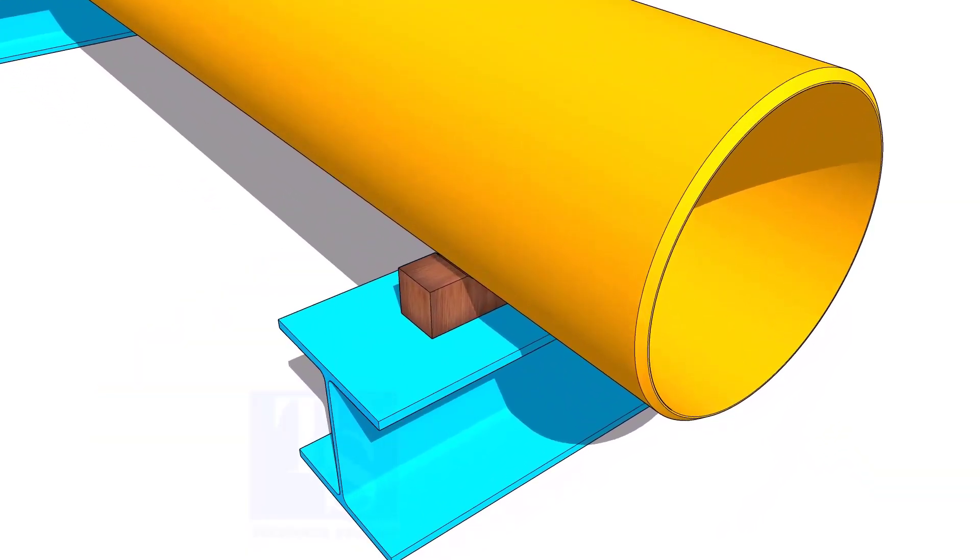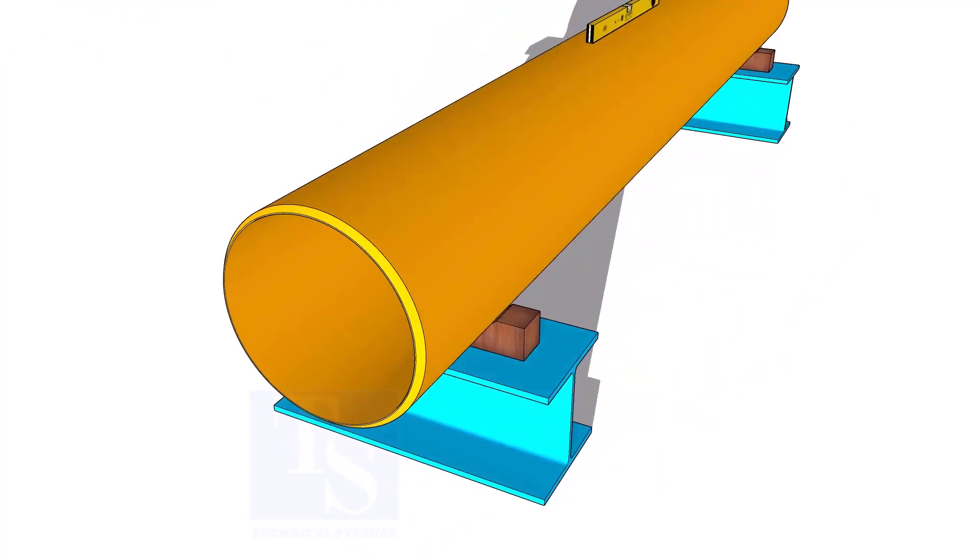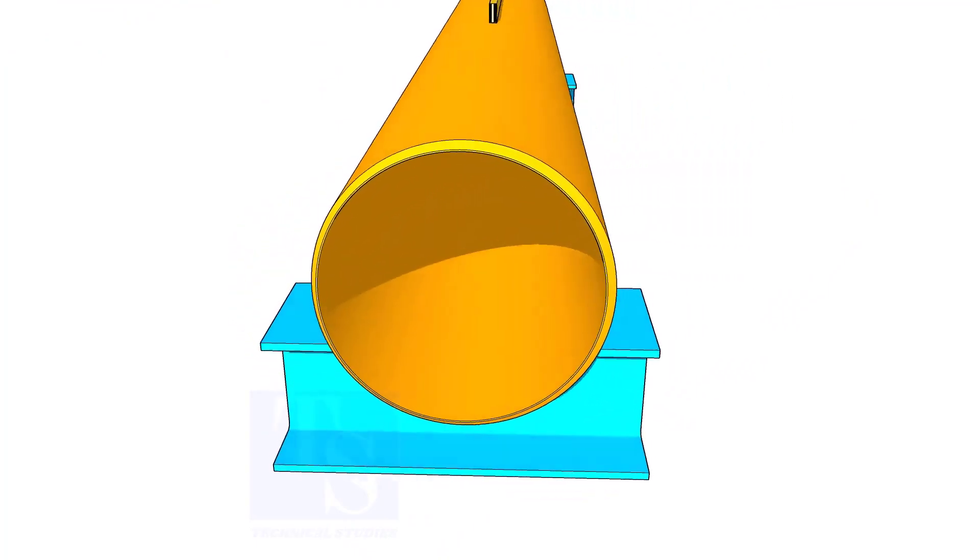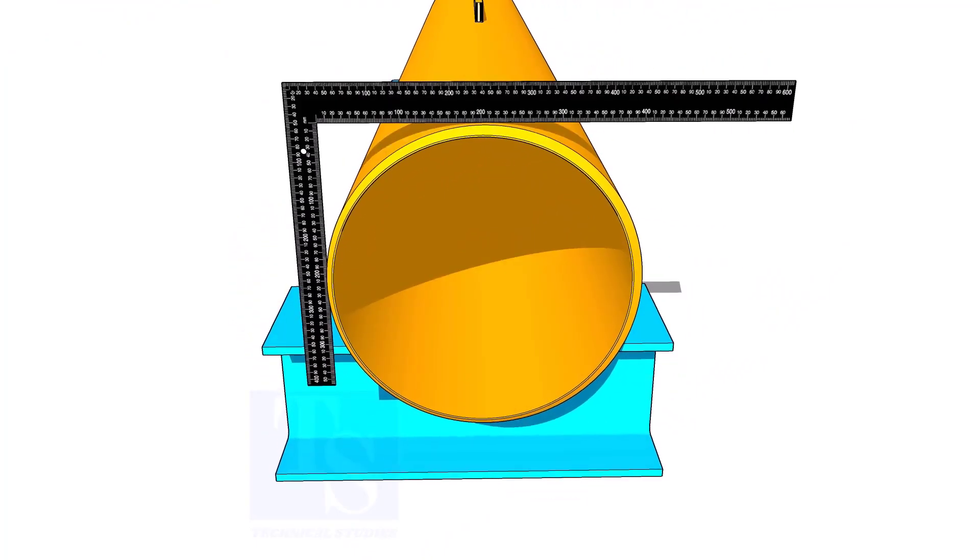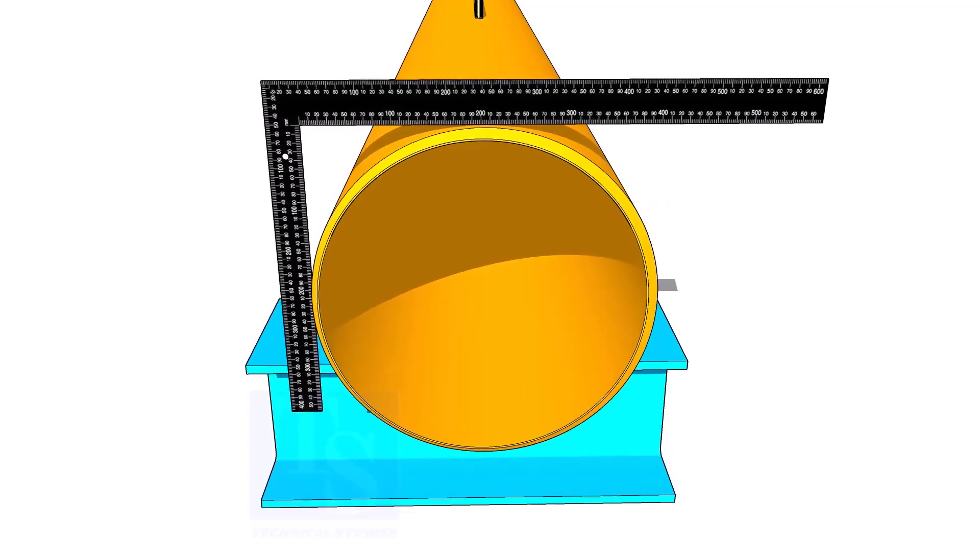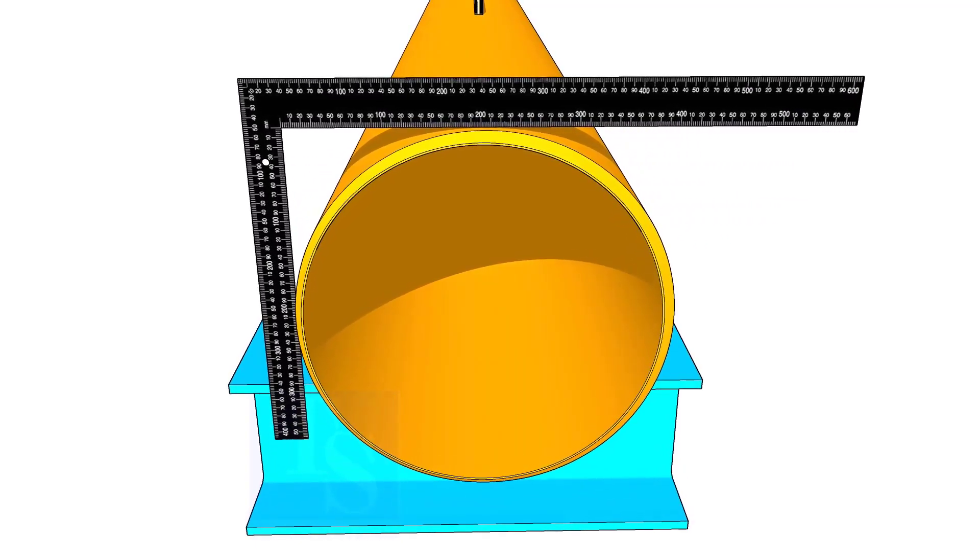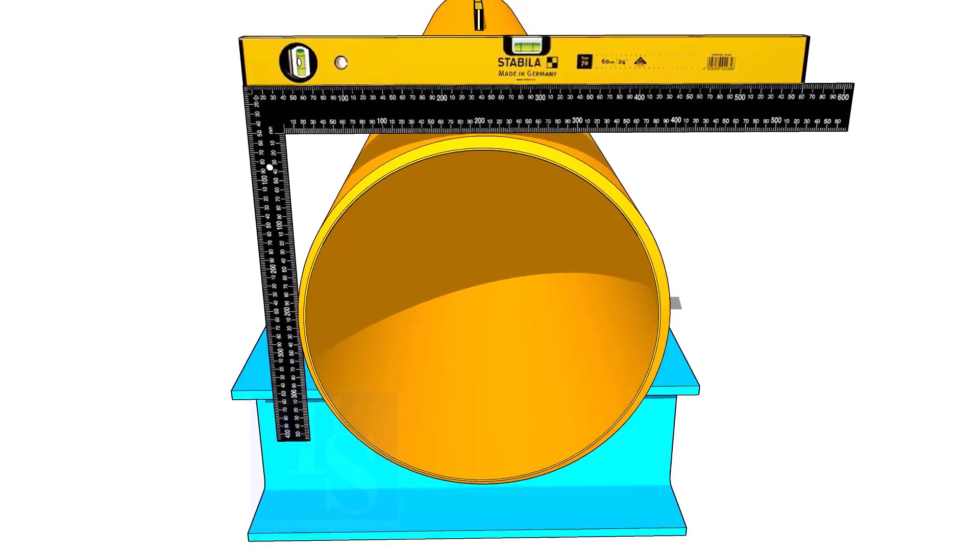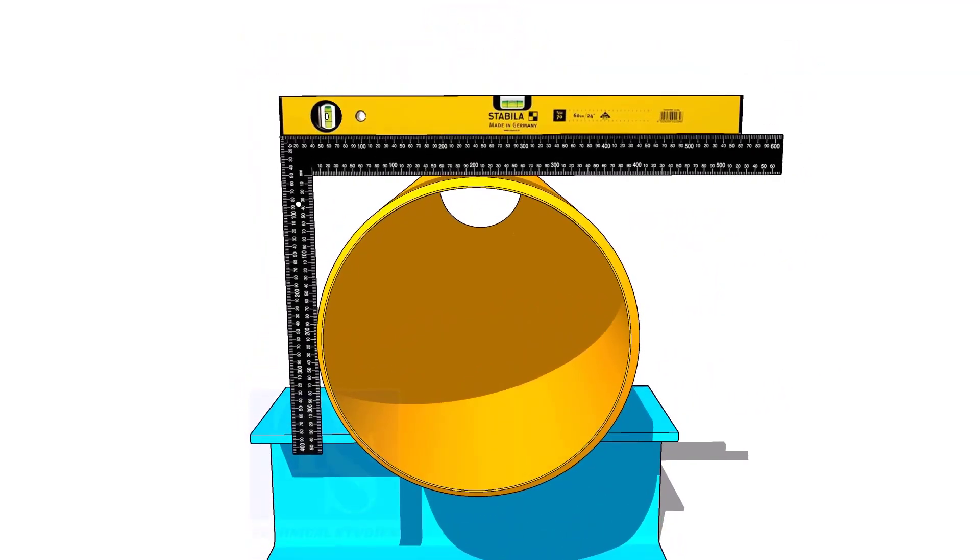Level the pipe and put packing. Put a right angle and a level bottle on the pipe as shown. Make the right angle top face level.